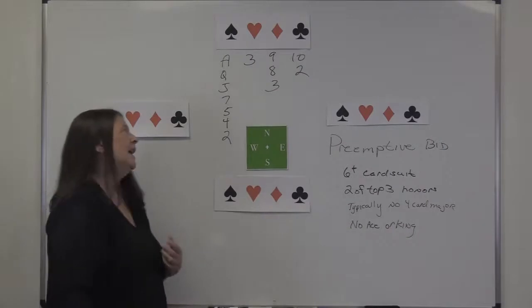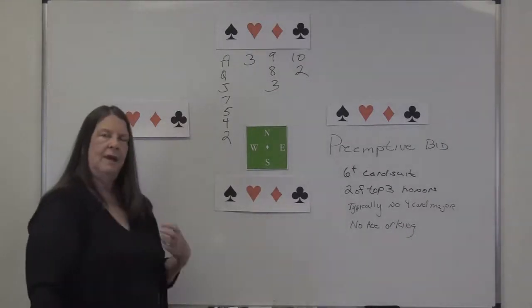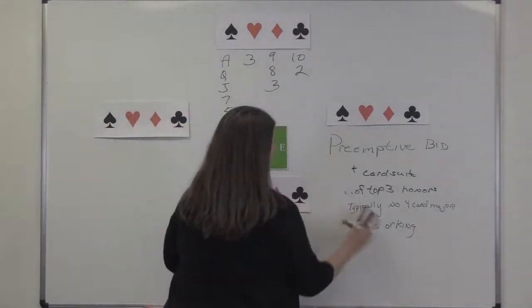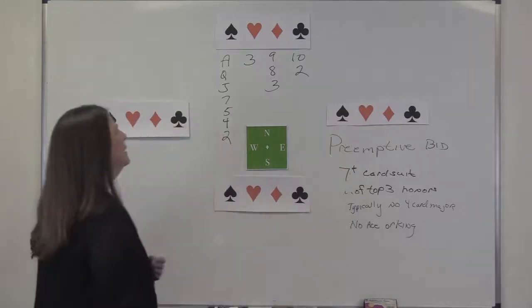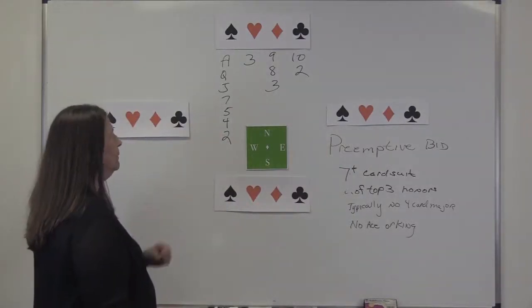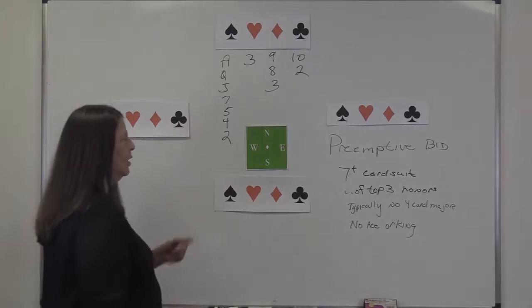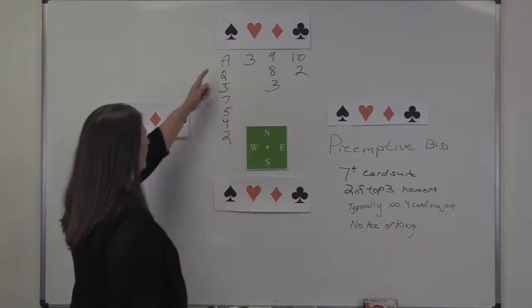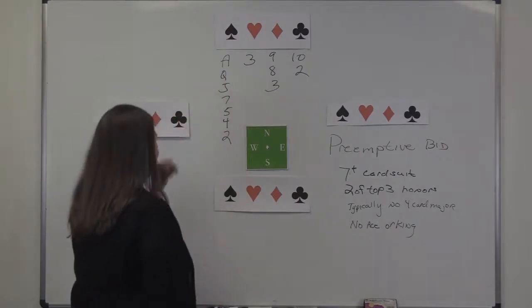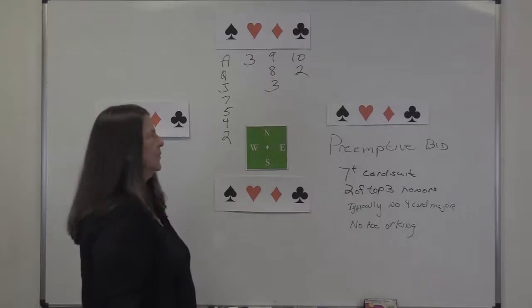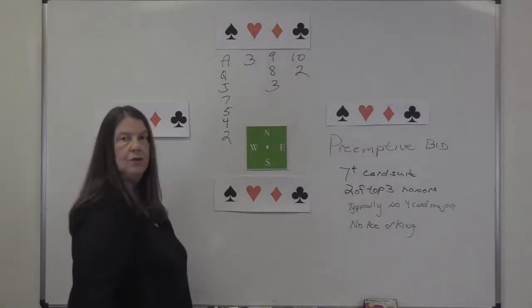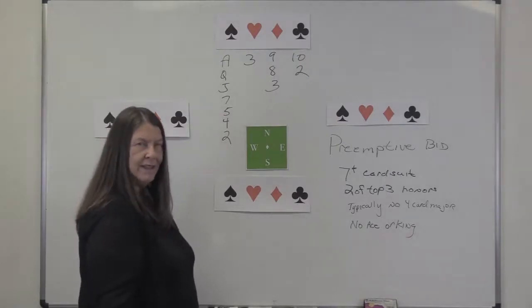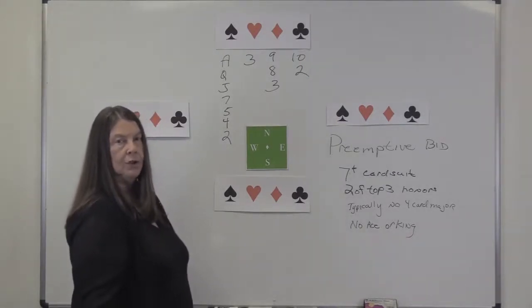So this is what a preempt might look like. I have seven spades. I have an ace, the queen, the jack, in seven spades. So I have a good seven-card suit. Excuse me, I said six-plus-card suit. This is supposed to be seven. Excuse me. I have a seven-card suit. It's a good one. I do not have four cards in another major. I do have two of the top three. As a matter of fact, I have three of them, not the top five. And I have no ace or king in another suit.